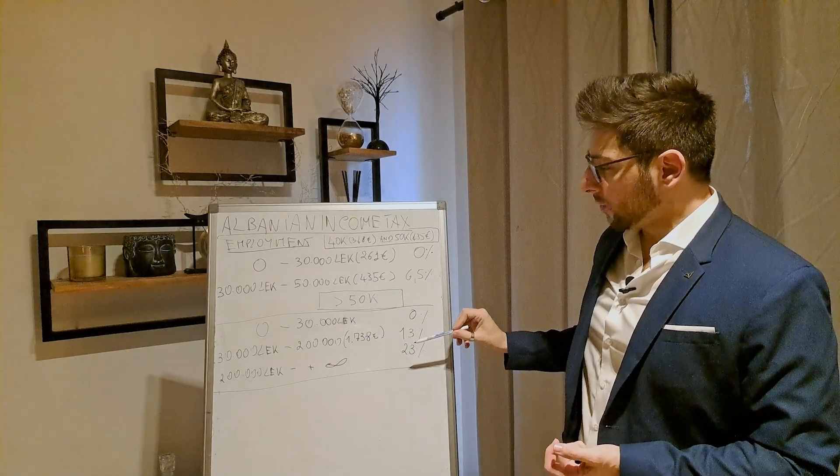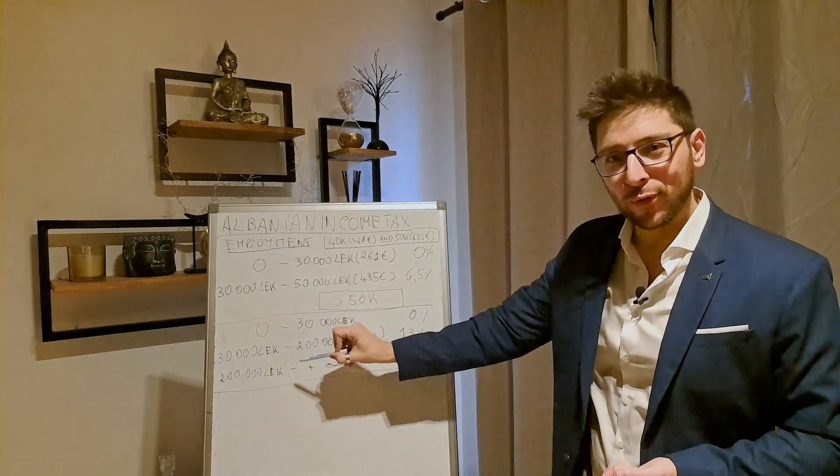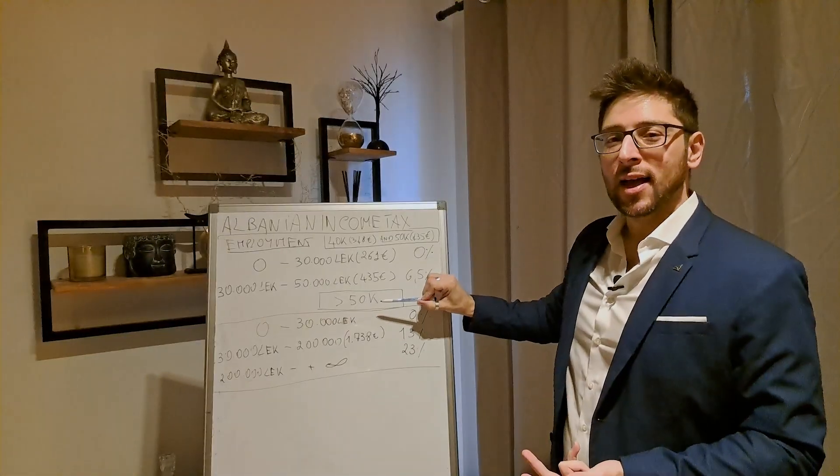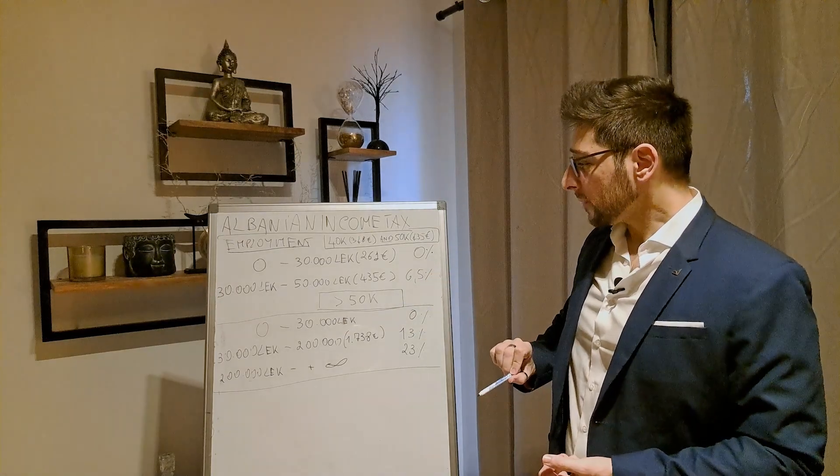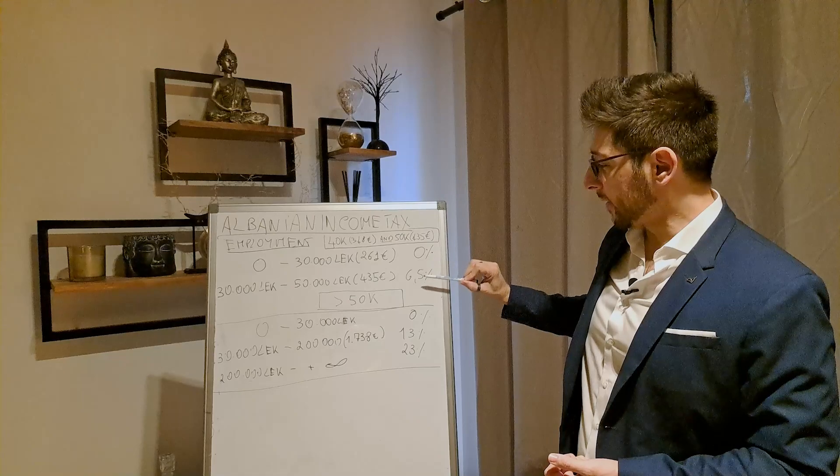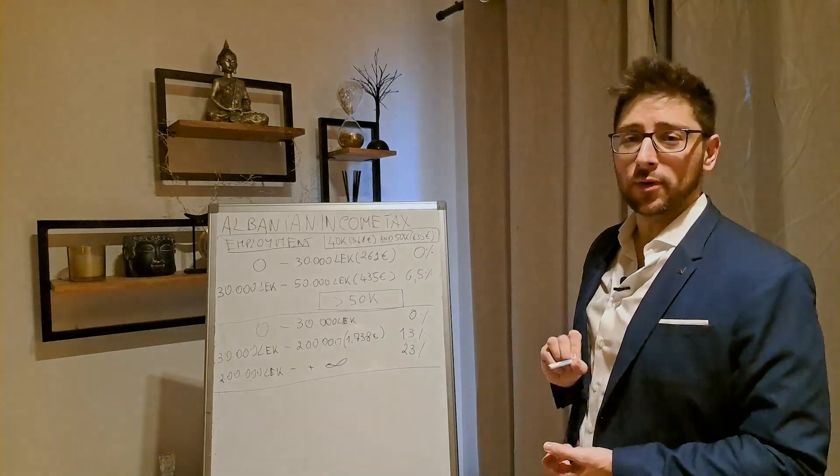What is more interesting is more likely you are going to fall in this second tax bracket system. When your income is bigger than 50,000 LEC, okay? And then the tax bracket changes, okay? It's not this 0 and 6.5, but 0, 13 and 23.